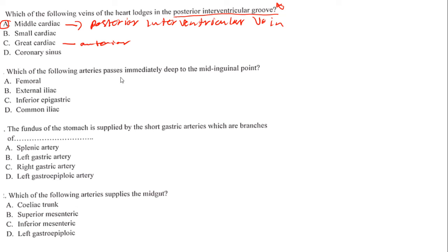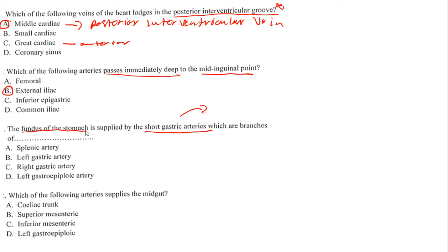Which of the following arteries passes immediately deep to the mid-inguinal point? This can appear in test one or test two depending on how far dissection has progressed. The answer is the external iliac artery, which passes immediately deep to the mid-inguinal point.